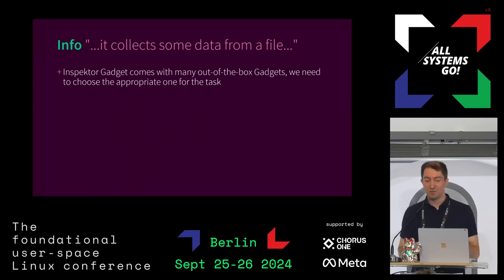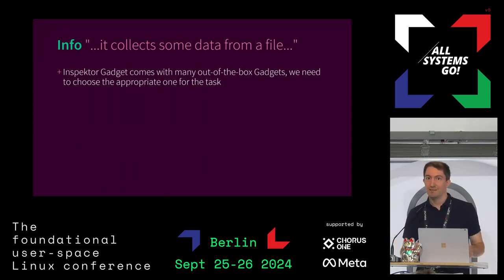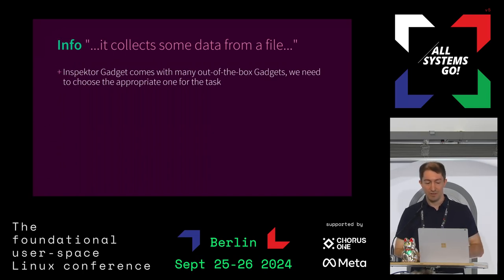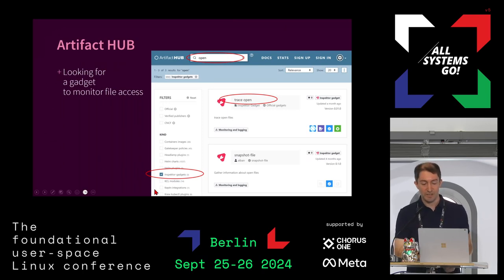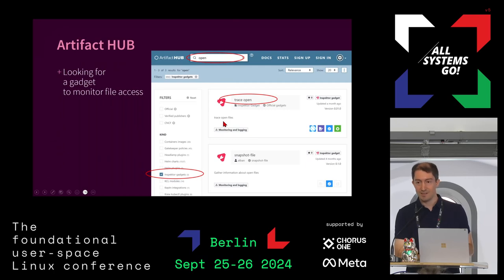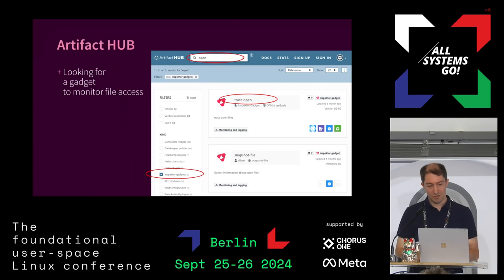Our task is to get information about data from a file. Which file is it reading? Inspector Gadget comes with a lot of gadgets that already exist. How do we find the proper one? There is something called Artifact Hub, which is a CNCF initiative to host artifacts from different projects, including gadgets from Inspector Gadget. If we search for 'opening file', we find a few gadgets, and this one looks like what we want because it traces open file calls.